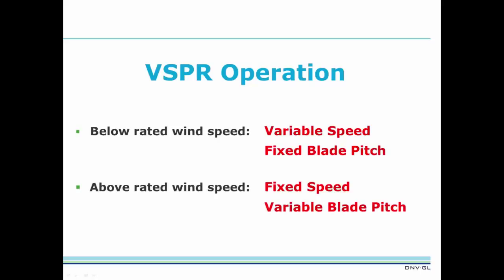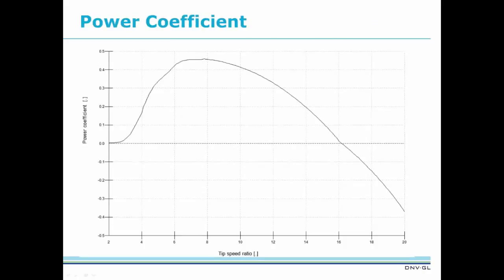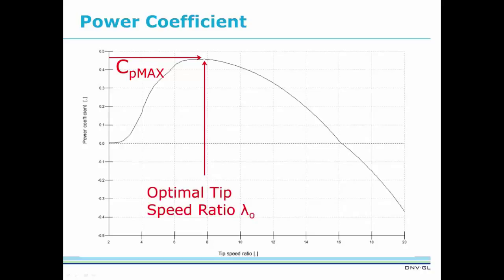Let's start by looking at operation below rated wind speed. This is variable speed operation and we'll be introducing the term optimal mode gain. At wind speeds below rated, the goal is to capture as much energy as possible by maximizing the power coefficient. To do this, the tip speed ratio must be kept constant at the optimal value. This is only possible if the speed of the rotor can change as wind speed changes.